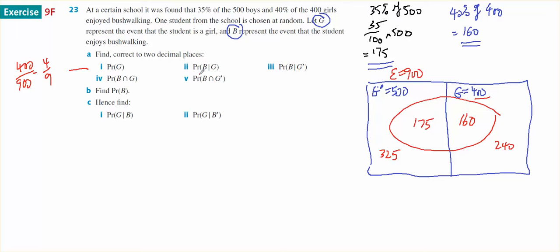Probability of a bushwalker given that she is a girl. So this is going to be the probability of bushwalking intersect girl over the probability of girl. The bushwalking intersection of girls is 160 over 900, and probability of a girl is 400 over 900.